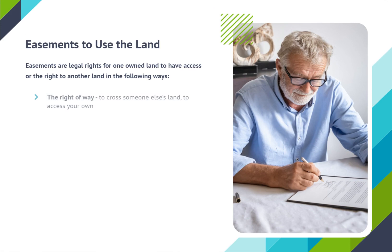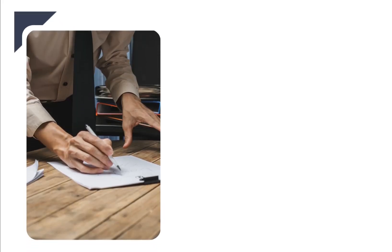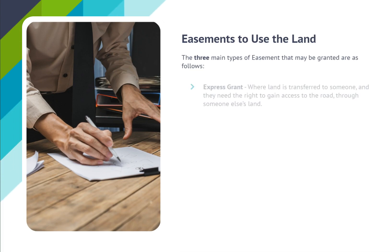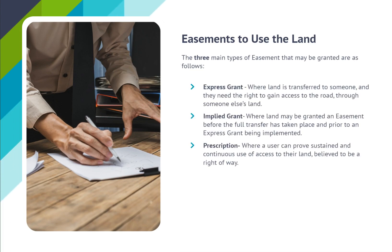Easements to use the land: easements are legal rights for one owned land to have access or the right to another land, such as the right of way to cross someone else's land to access your own, and the right of light — the right to have light shine across another person's land. The three main types of easement are: express grant, where land is transferred to someone and they need the right to gain access to a road through someone else's land; implied grant, where land may be granted an easement before the full transfer has taken place and prior to an express grant being implemented; and prescription, where a user can prove sustained and continuous use of access to the land, believed to be a right of way.